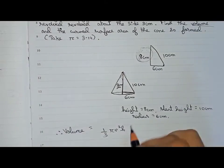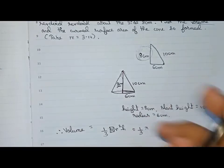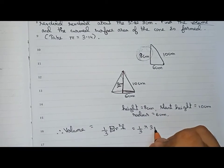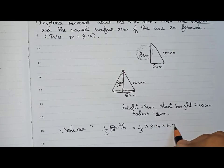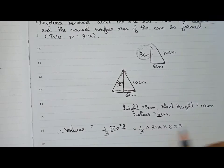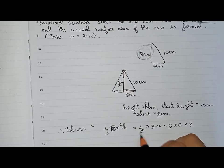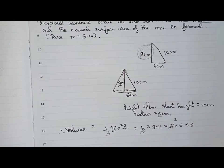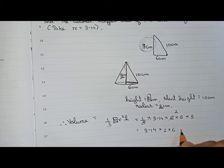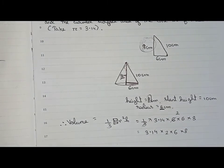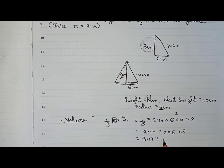Applying the formula: 1/3 into 3.14 (since pi is given as 3.14) into r squared, where r is 6, so 6 × 6, into height which is 8 centimeter. Now 3 and 6 cancel, it becomes 2. So it becomes 3.14 × 2 × 6 × 8. Calculating 2 × 6 × 8 gives 96.